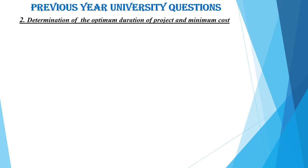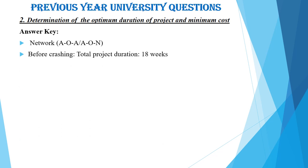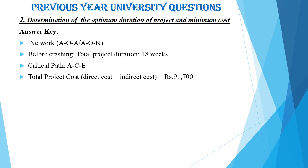Before starting work, you have to draw the network — either AON or AOA network. Here I am briefly describing the answer key for this particular numerical problem. First, you have to draw the network and then estimate the different project duration and cost before crashing. Before crashing, the total project duration is estimated as 18 weeks and the critical path is identified as ACE. The total project cost, which is the sum of direct cost and indirect cost, is estimated as Rs. 91,700.